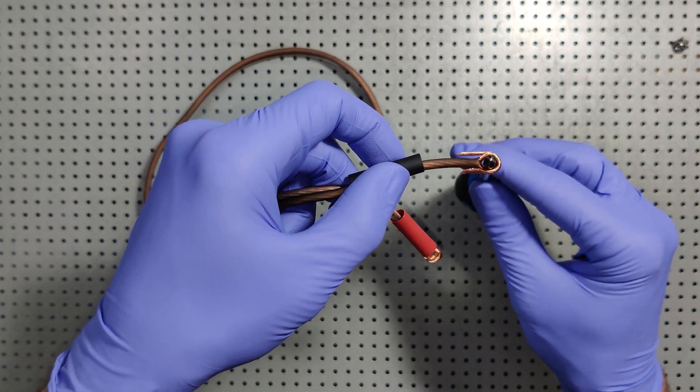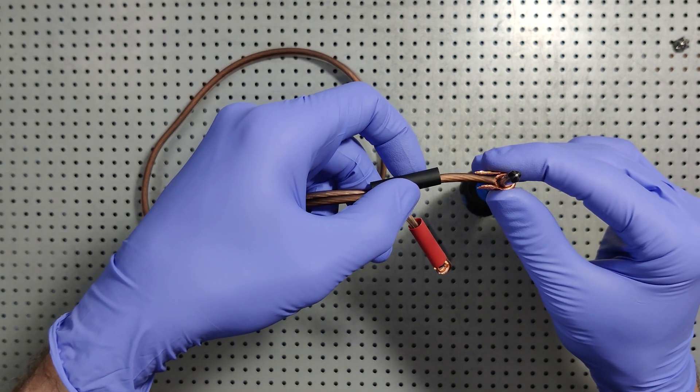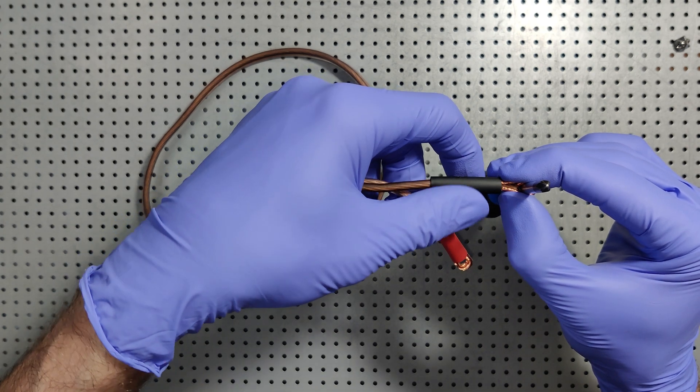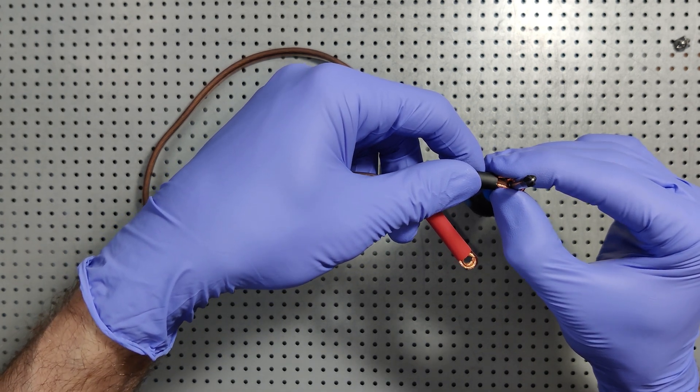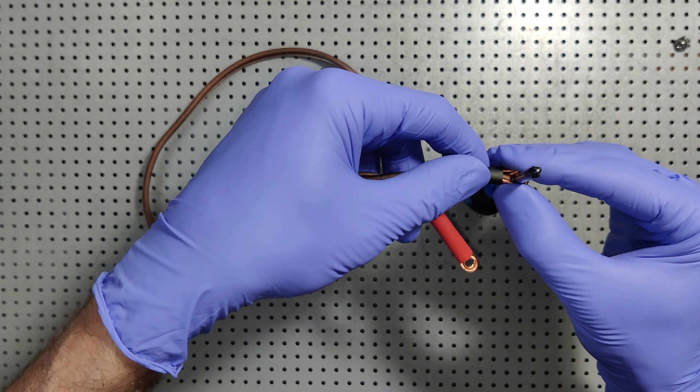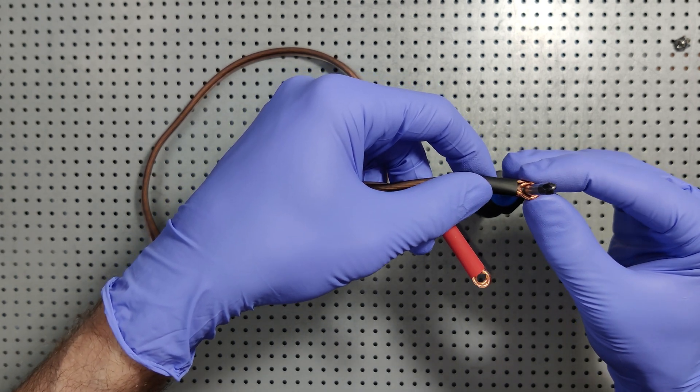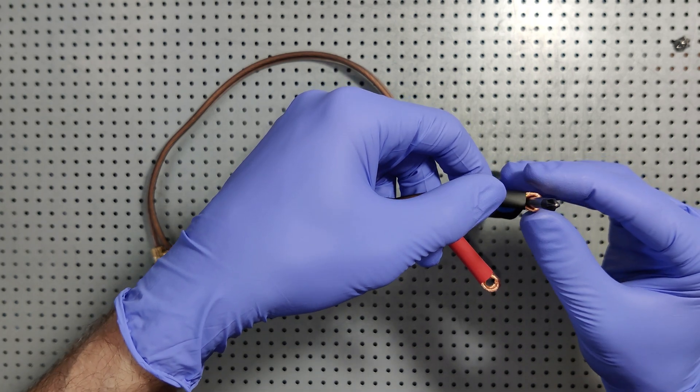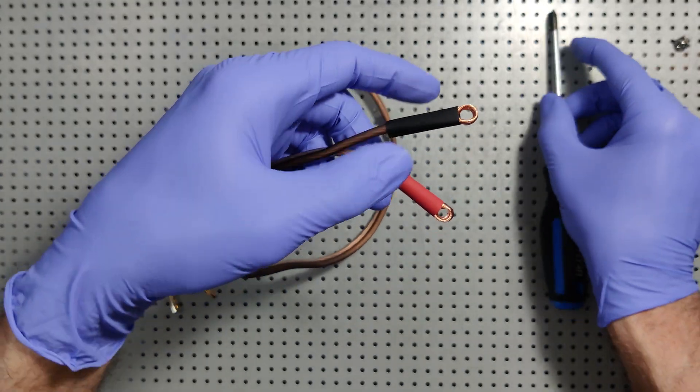And we do the same thing on the other side. Screwdriver back in. Push. And then just try your best. If you've wrapped the copper correctly, you shouldn't get any of those copper hairs sticking out. Push like that. And pull it out.